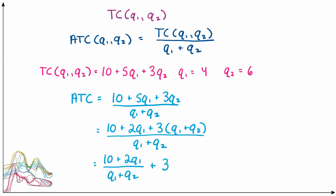You can test this by plugging in 4 for Q1 and 6 for Q2. You get (10 + 2×4) / (4 + 6), which is 10 over 5 plus 3, which is 1.8 plus 3 — which is again 4.8. No surprise there.